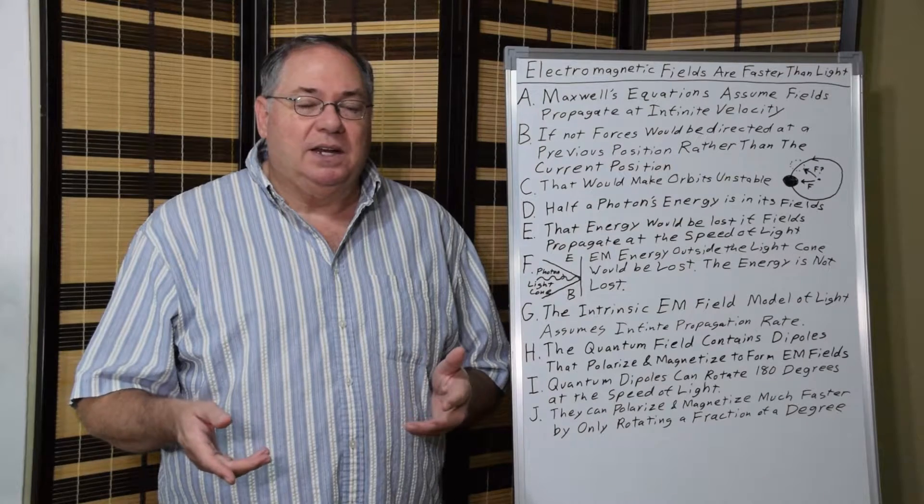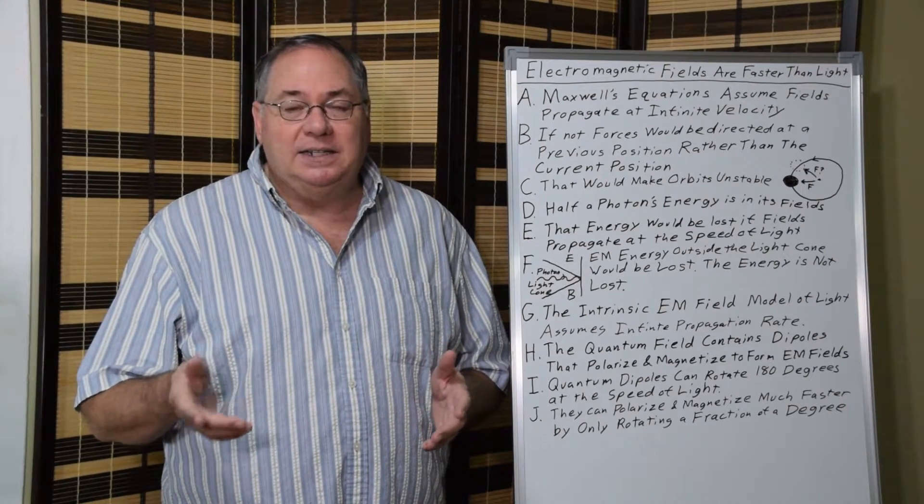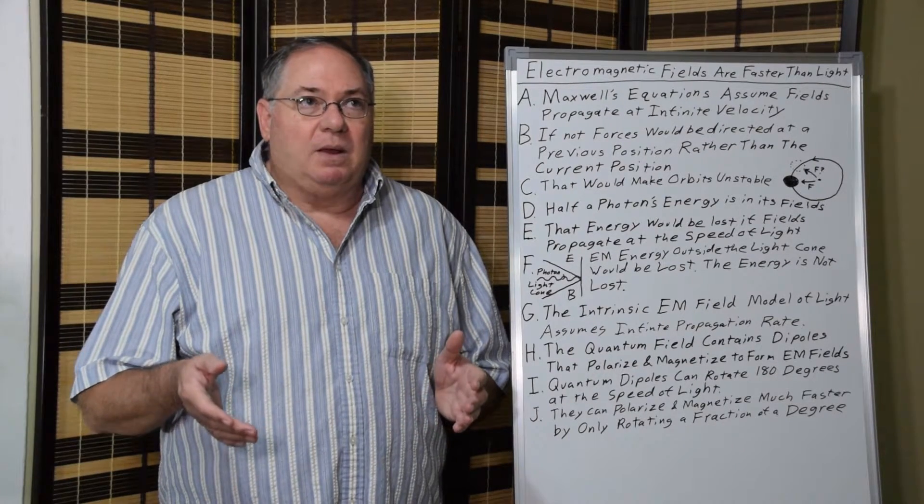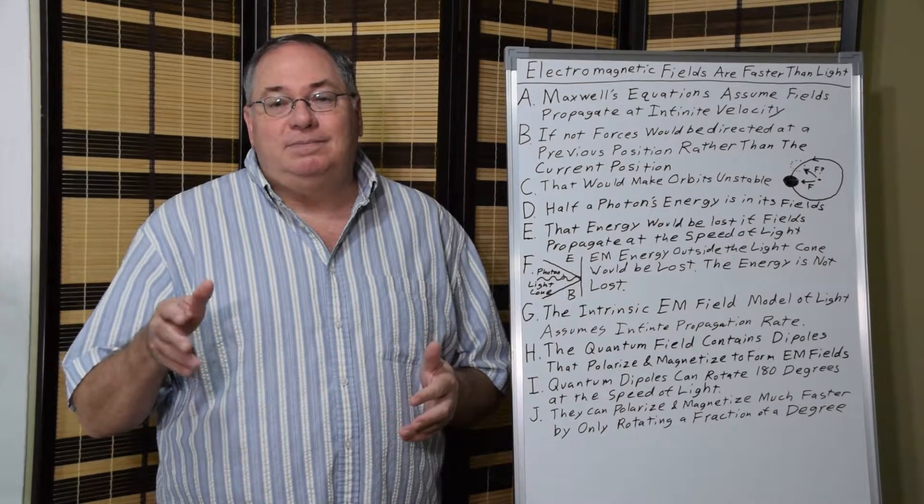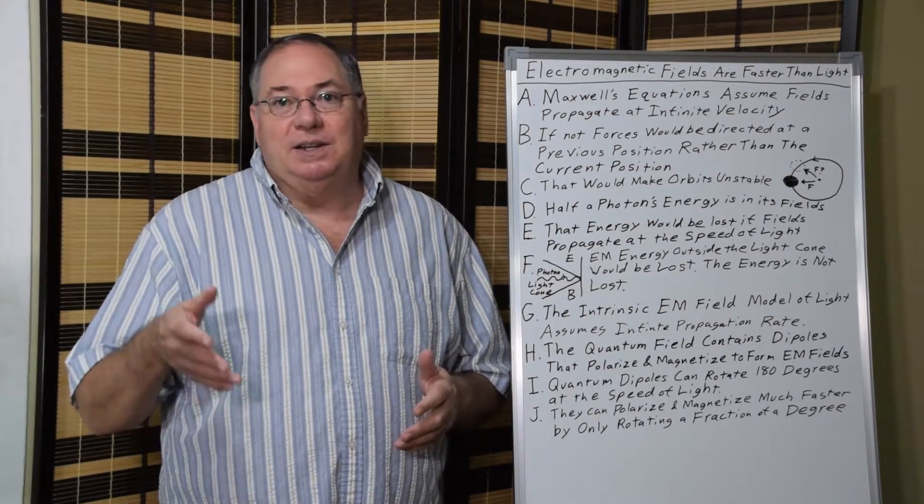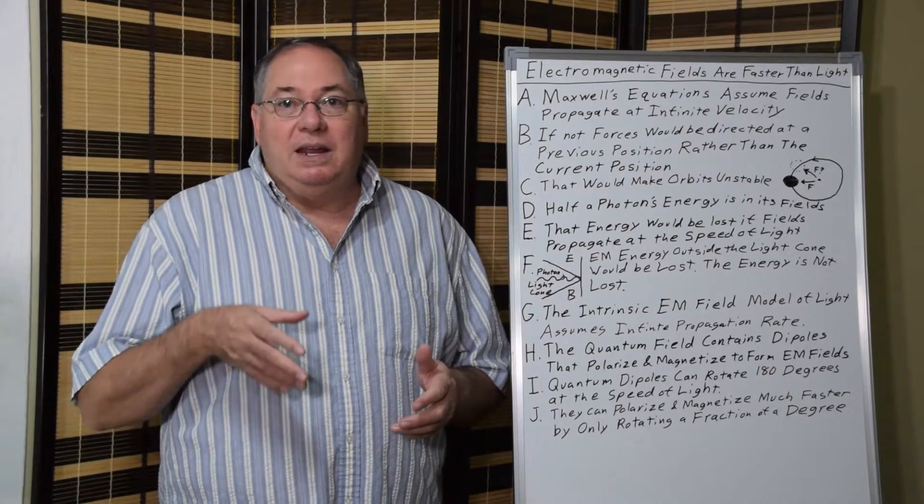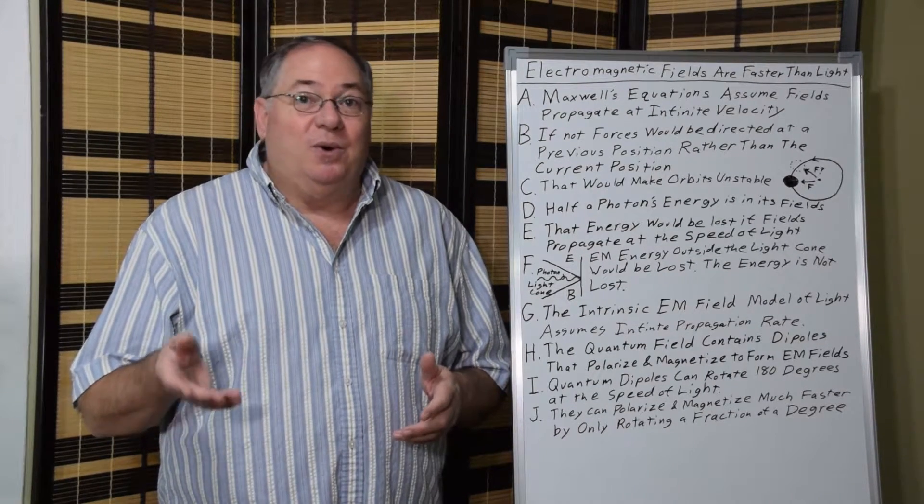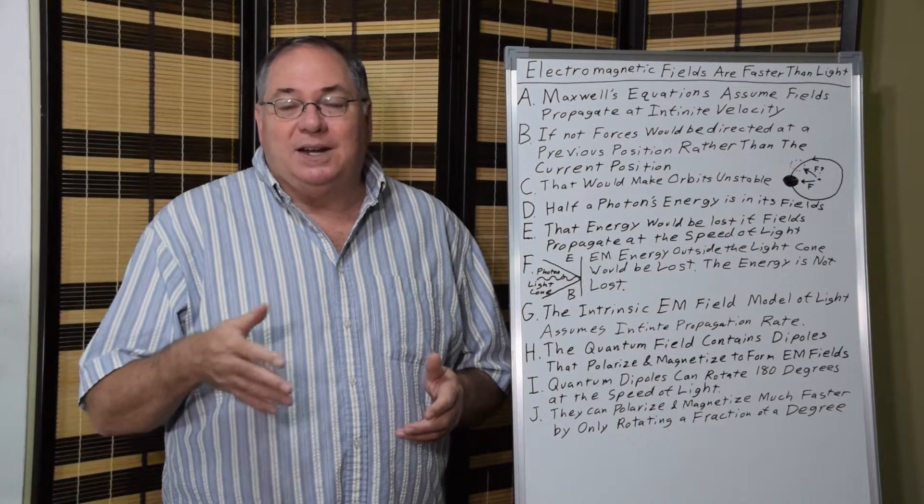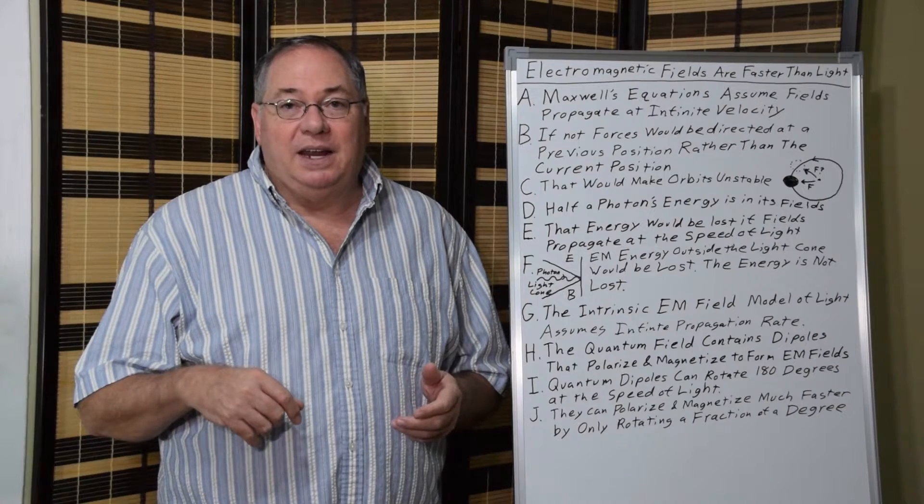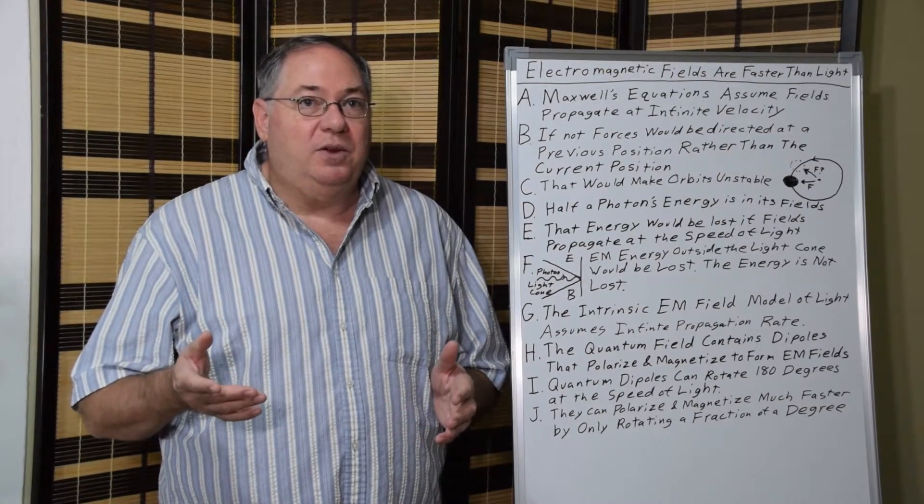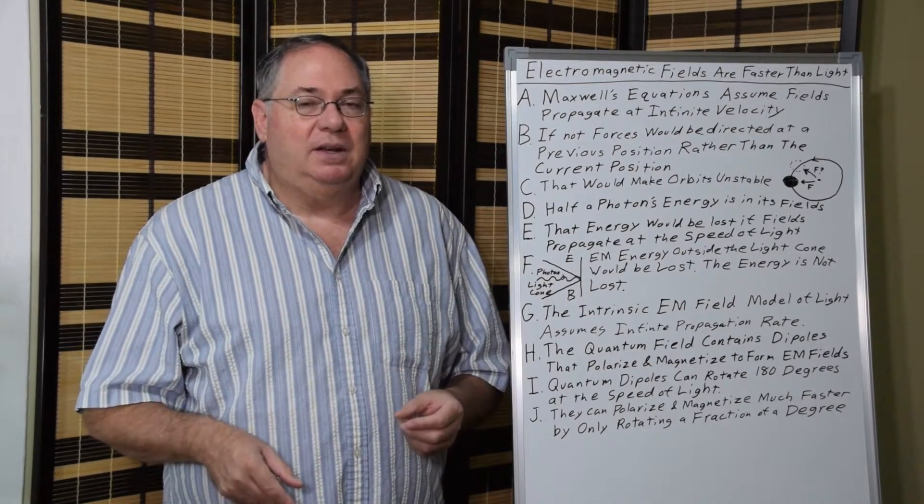Because half of the photon energy is in the electromagnetic fields. And that's something else that doesn't get discussed, but it was something that Einstein and Hopf figured out in the 1910s when they were doing work with zero point field theory. They realized that the reason we put one half kv squared, for example, as the energy of a moving body is because we ignore the energy that's in the quantum field. If we look at the total energy, it's kv squared or mv squared. We get mass times speed of light squared, which gives us the total energy in matter.